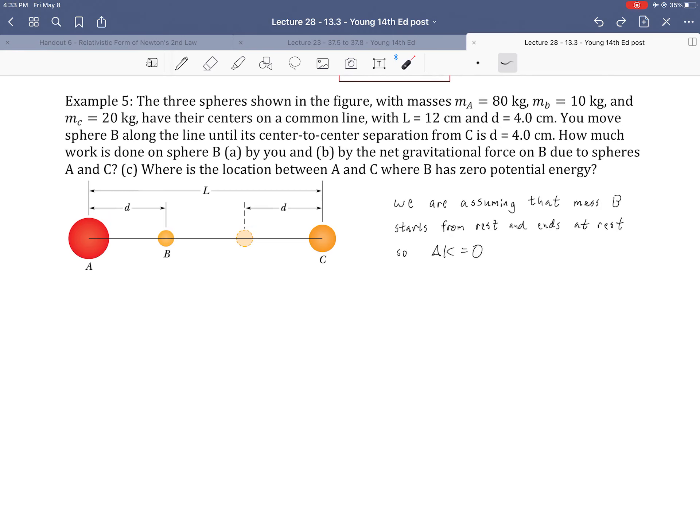So this is a system where we're going to be moving objects around and recalculating gravitational potential energy. In this case, we're assuming that mass B starts from rest and ends at rest. And in this case, we have three spheres. That's what's new about it because we'll have to calculate the gravitational potential energy for both of them. We're given all of their masses. They're all just a few kilograms. Their centers are on a common line, just centimeters apart.